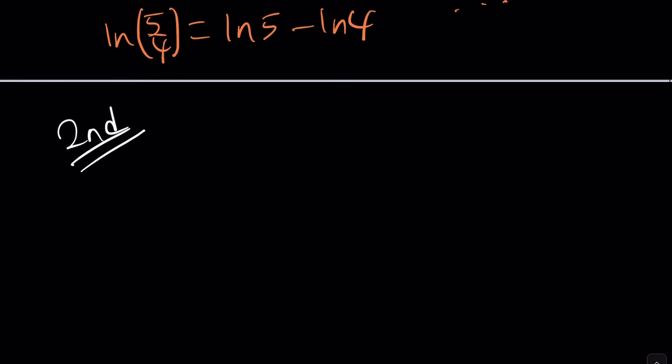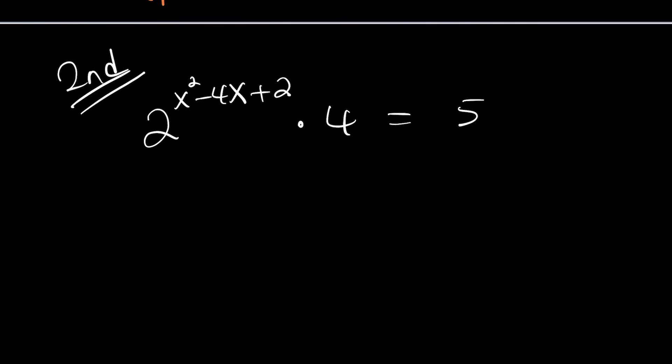We have the two to the power x squared minus four x plus two. Was it that? And then we multiply it by four and that equals five after cross multiplying. Remember? Now, why is this significant? Why did I cross multiply? Why does this help? Okay, there's a really good reason. It's about the basis.